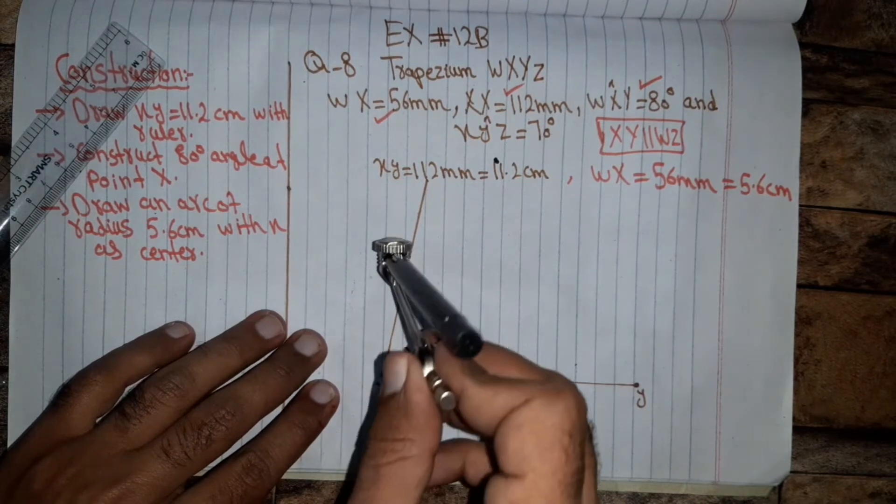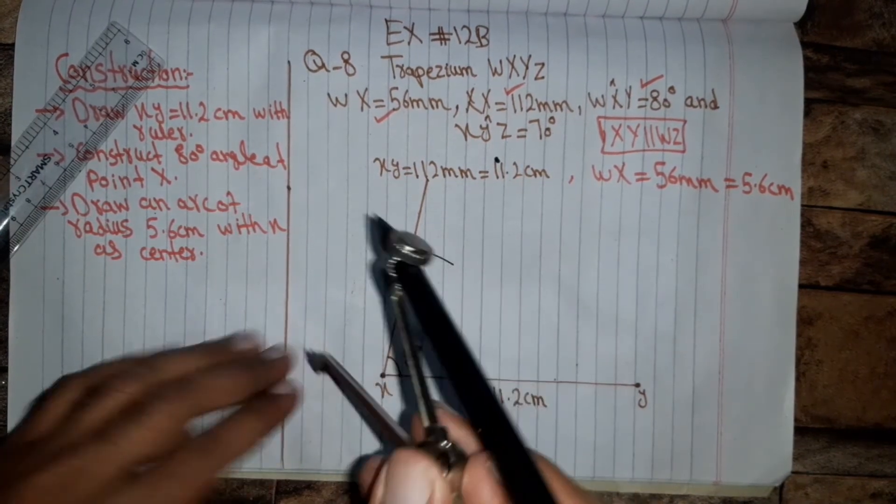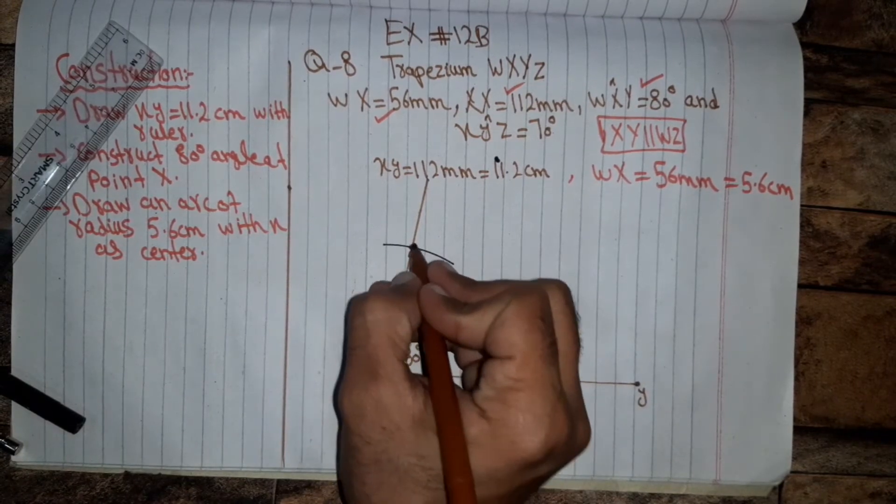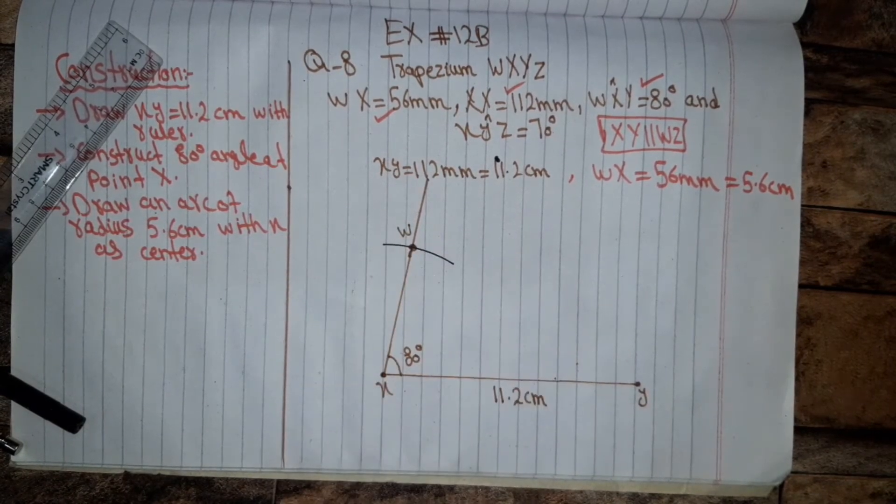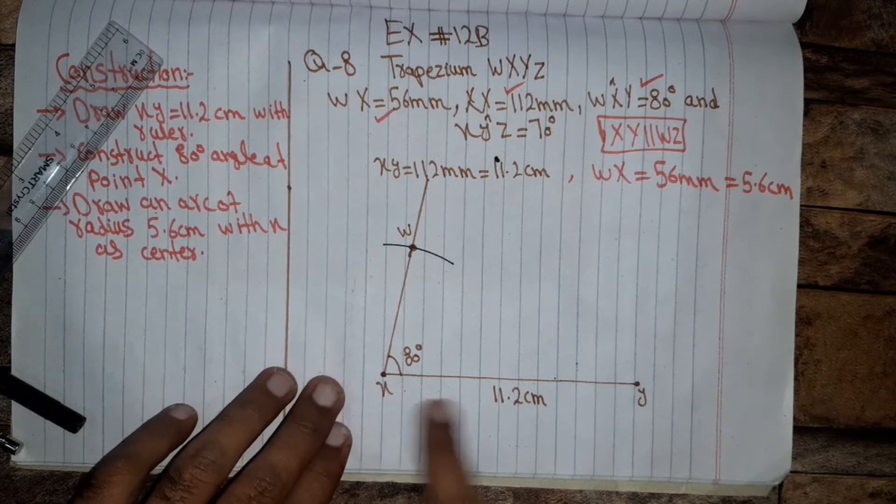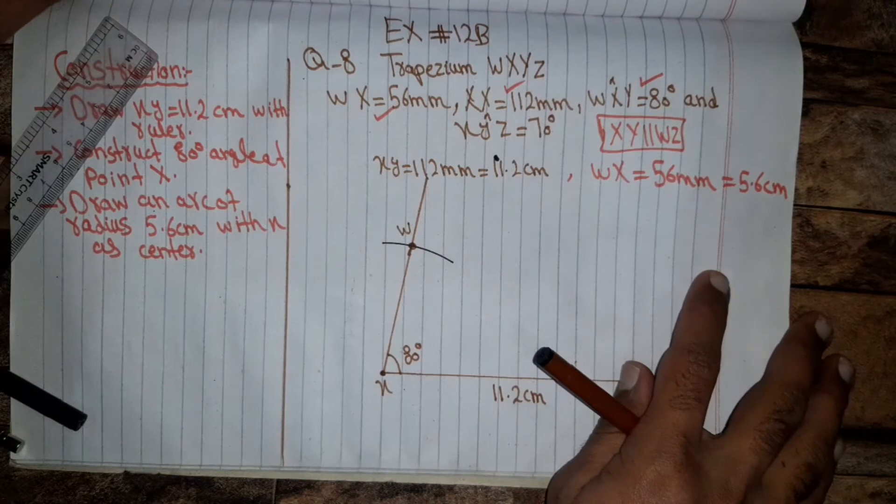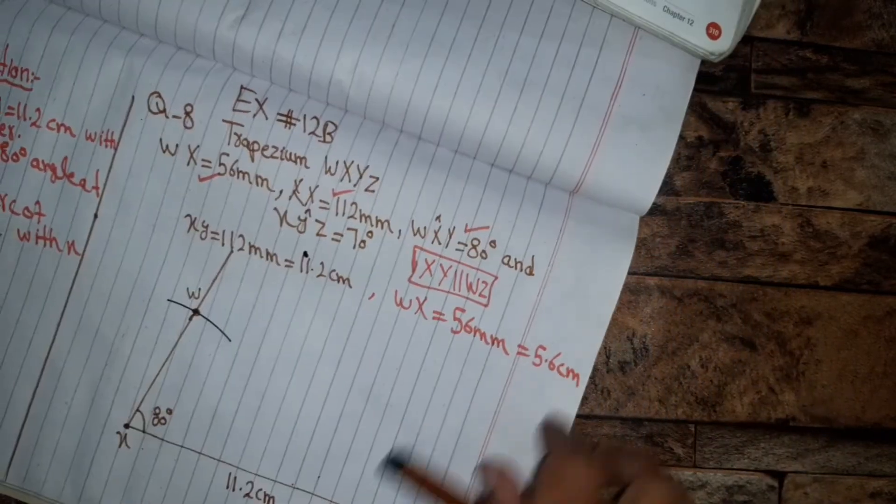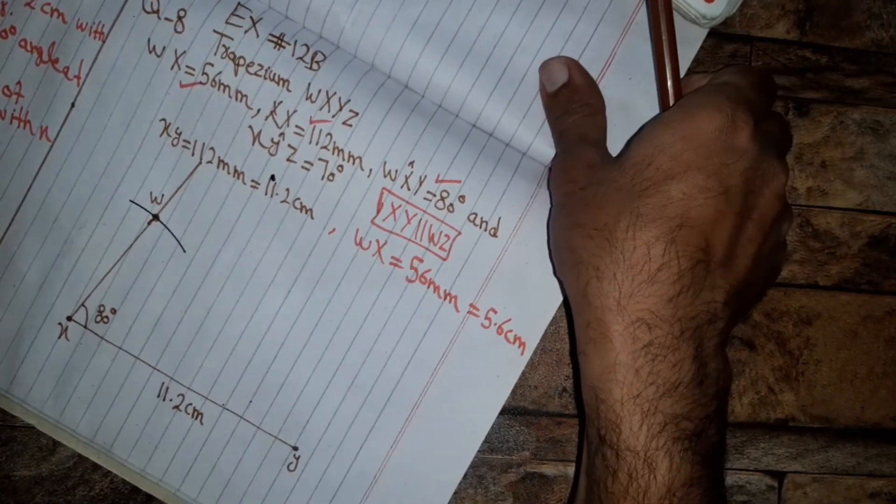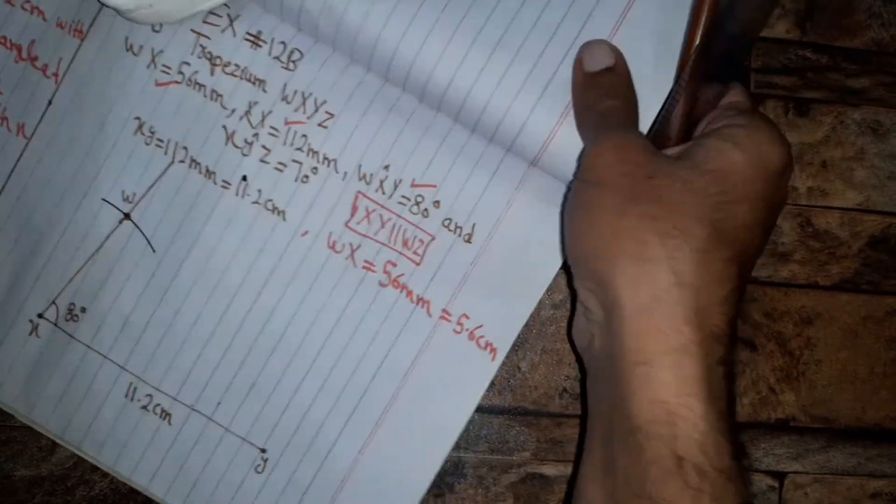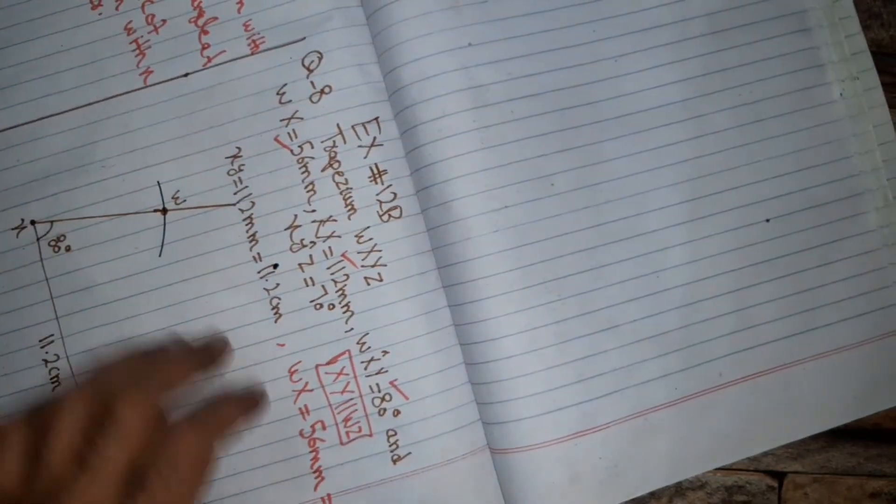So this is point X and this is W. Now as XY and WZ are parallel, we will draw a straight line at W.